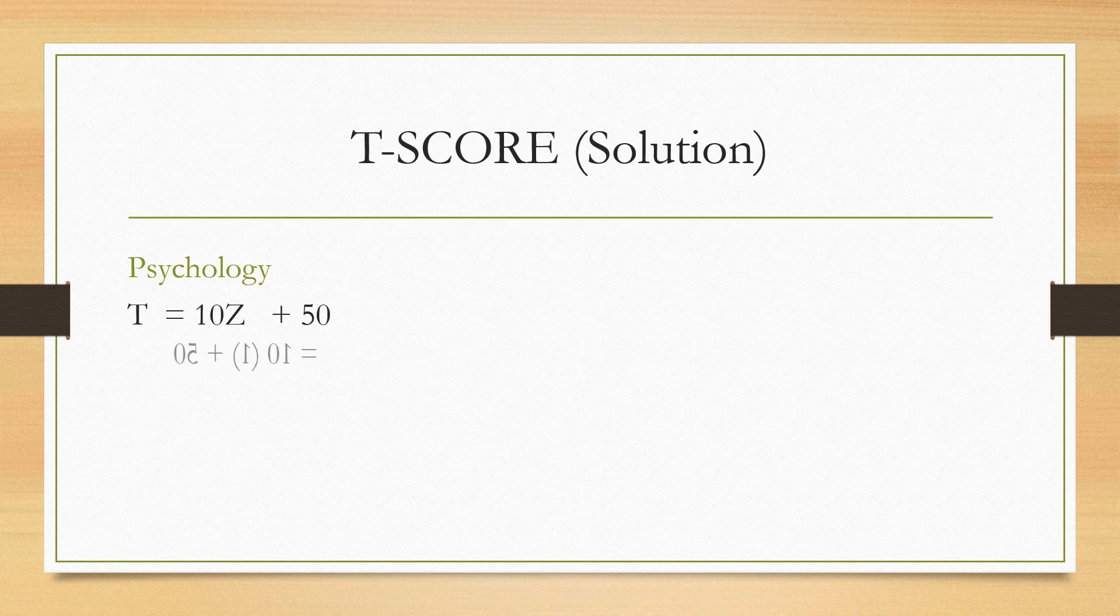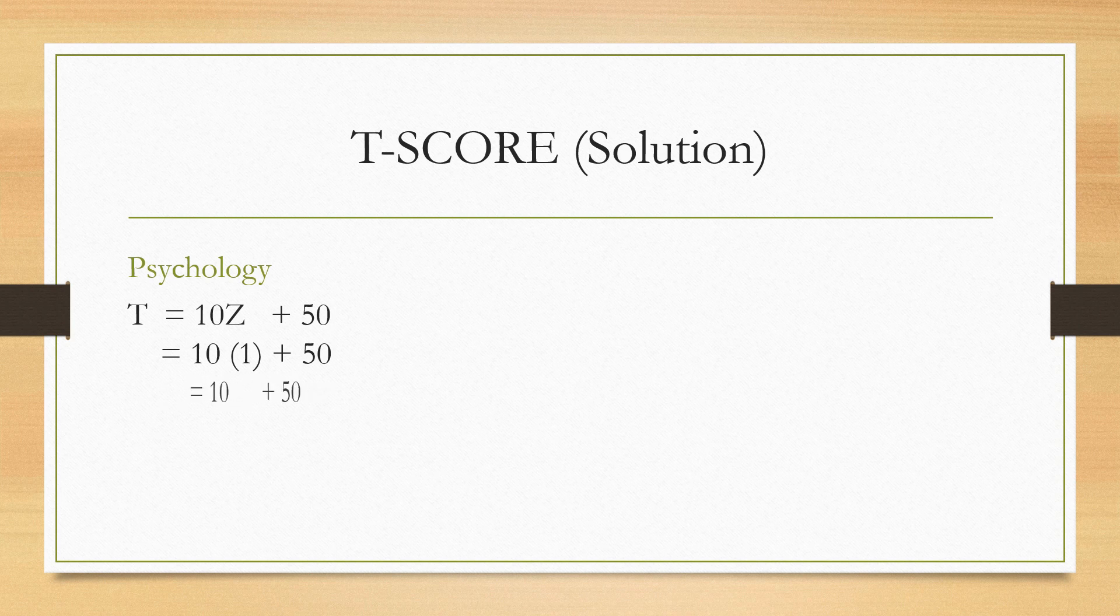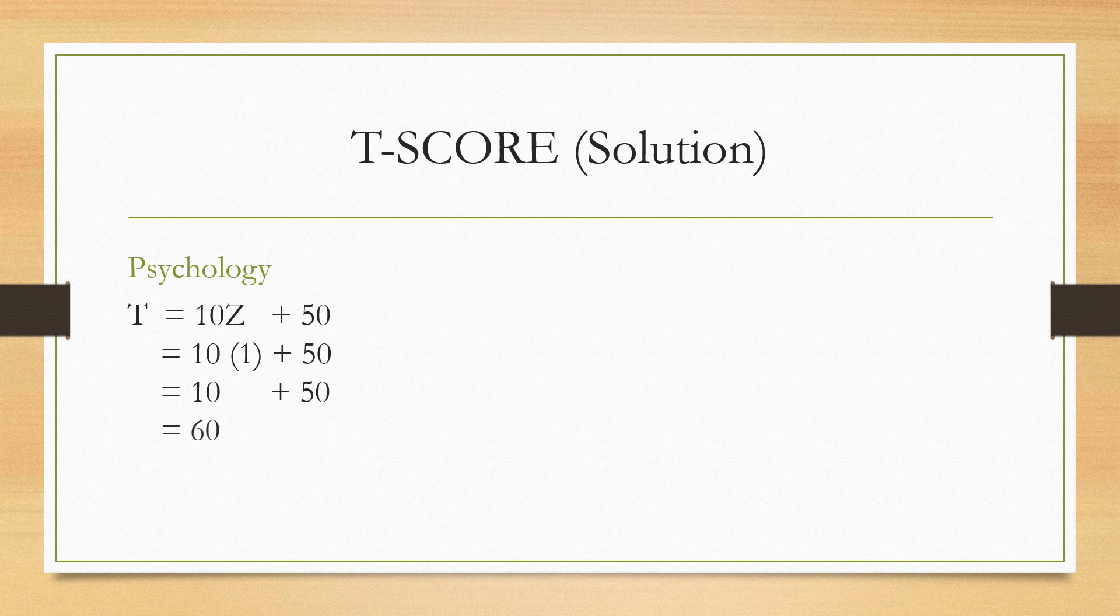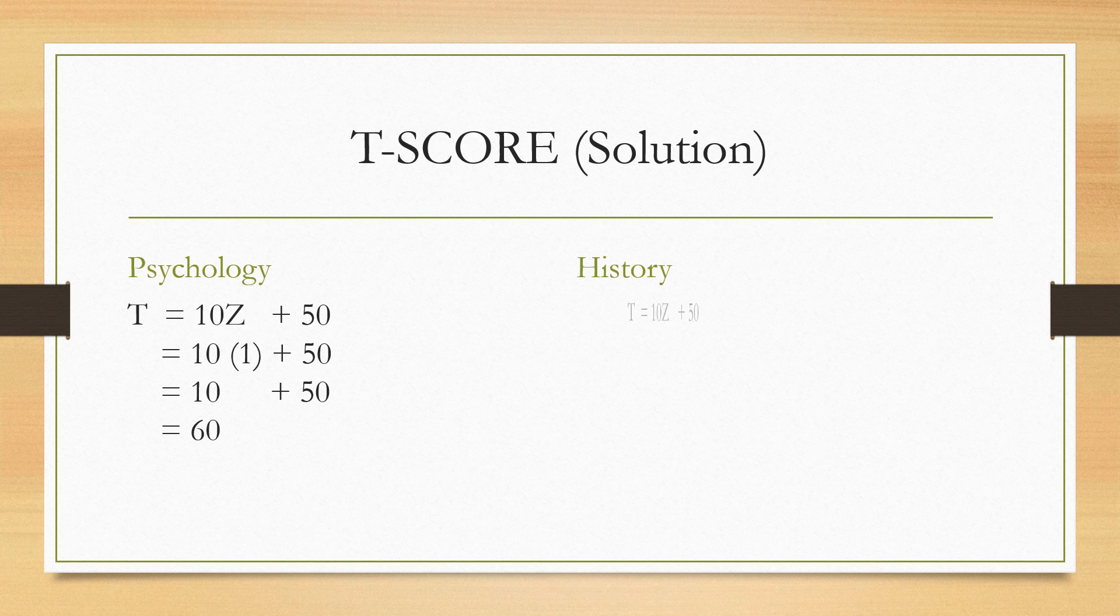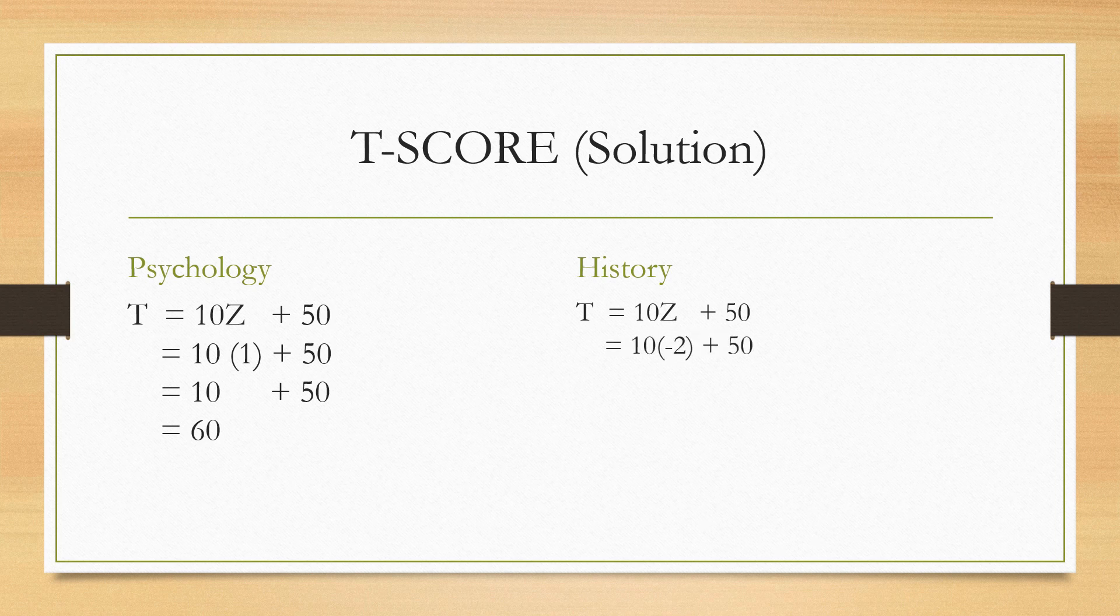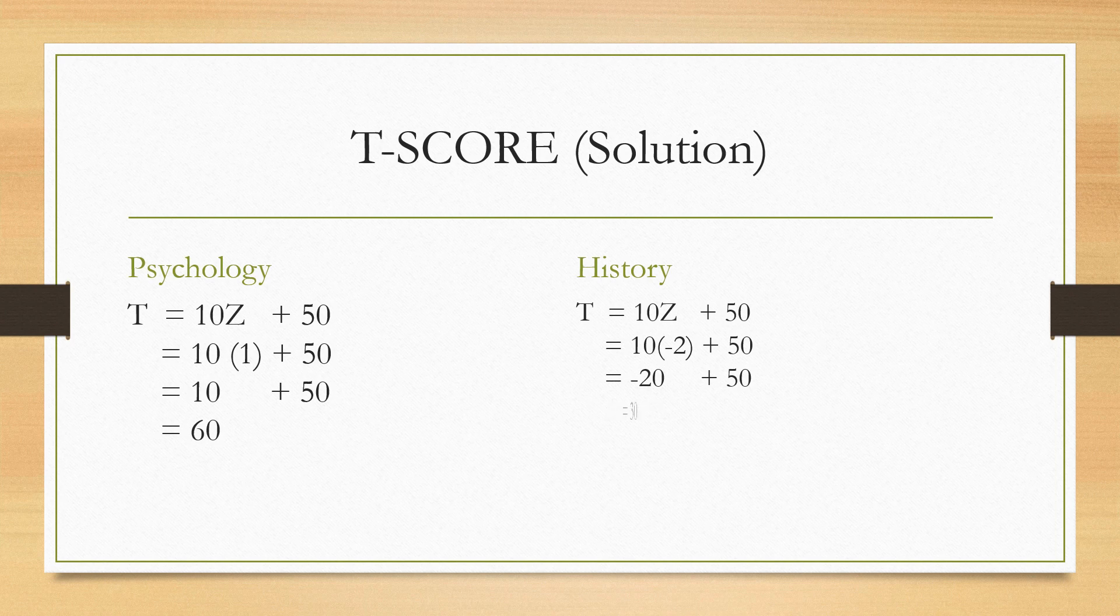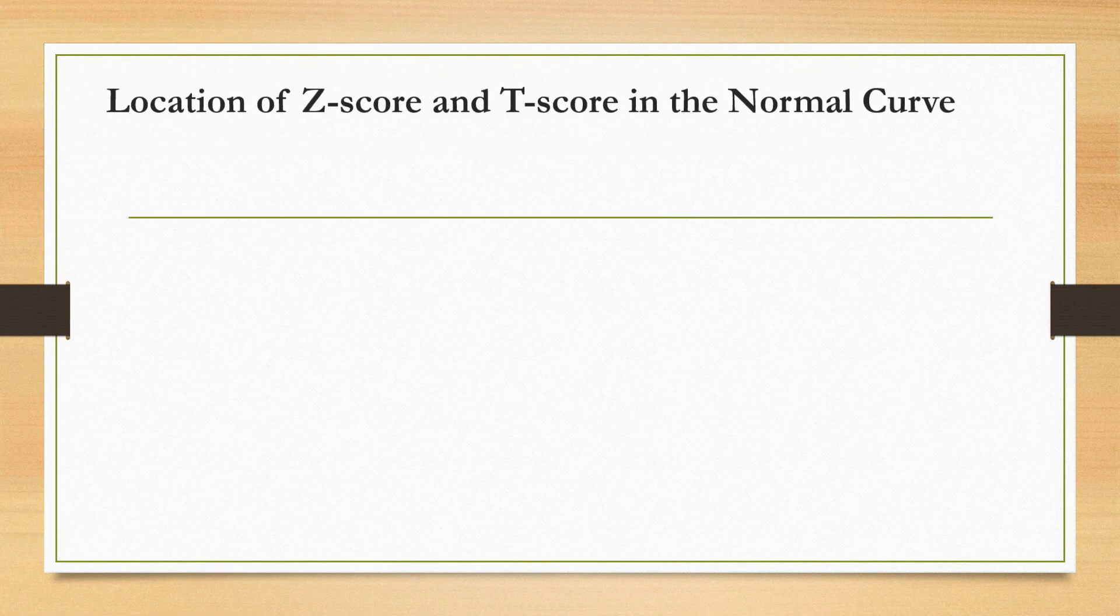Here's the solution. In psychology, T-score of Chan is equal to 10 times Z plus 50. By substitution, we have 10 times 1 plus 50 equals 60. While in history, T-score of Chan is equal to 10 times Z plus 50. By substitution, we have 10 times negative 2 plus 50 equals 30.